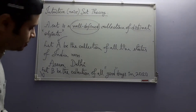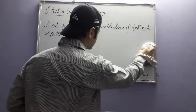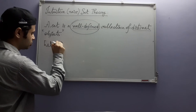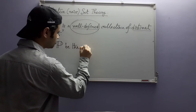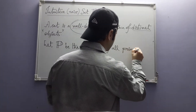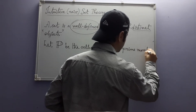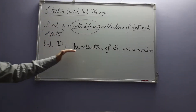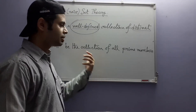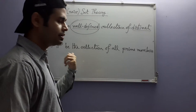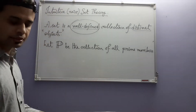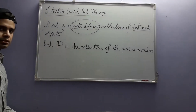Let us take a more mathematical example of the sorts of collections that arise in mathematics. Let P be the collection of all prime numbers. This is a well-defined collection because if we are given an object, we can decide without any doubt whether it is a prime number or not. So this collection is well-defined and it arises naturally in mathematics.